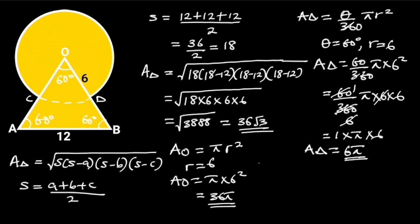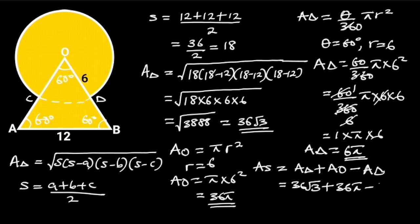Now we know the area of triangle OAB, the area of the circle, and the area of sector OCD. The area of the shape is equal to the area of the triangle plus the area of the circle minus the area of the sector. Plugging in the values: 36√3 plus 36π minus 6π. 36π minus 6π is equal to 30π. Hence, the area of the shape is equal to 36√3 plus 30π square units.